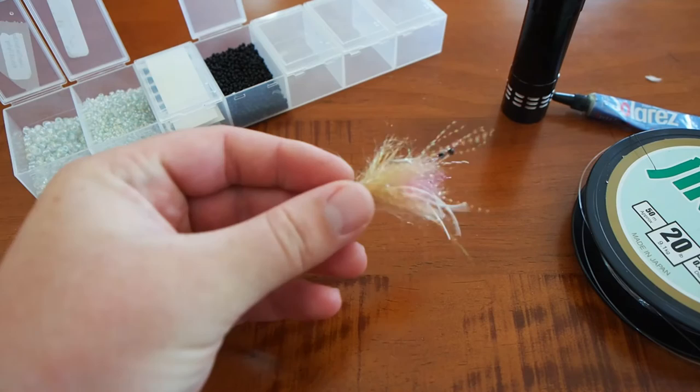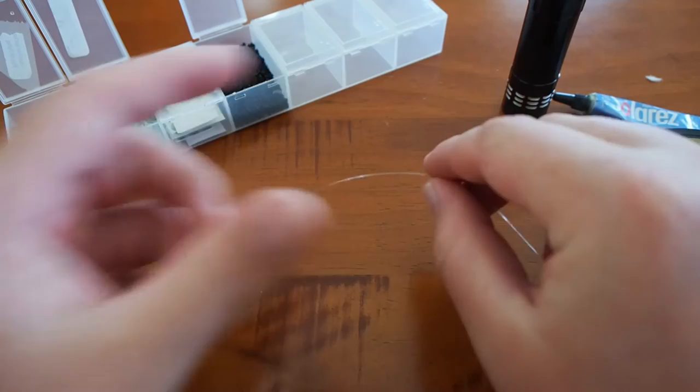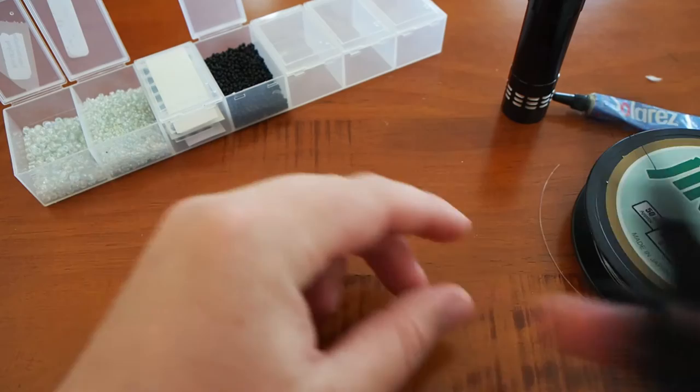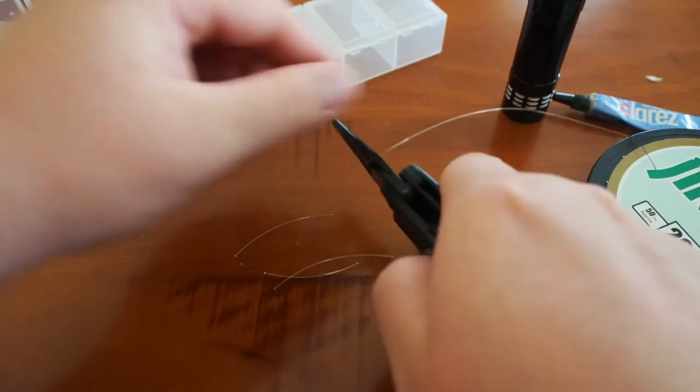So all we're going to do is get some 20 pound mono, a very nice one to use, and just cut off sections about that sort of size. You can make it as big or as small as you want. You can use heavier lines if you're going to make larger eyes.